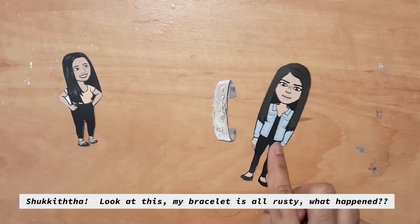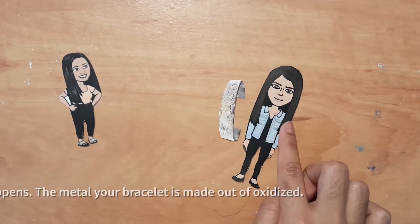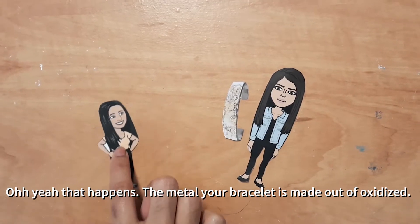Shikita, look at this, it's my bracelet. It's all rusty. What happened? Oh yeah, that happens.